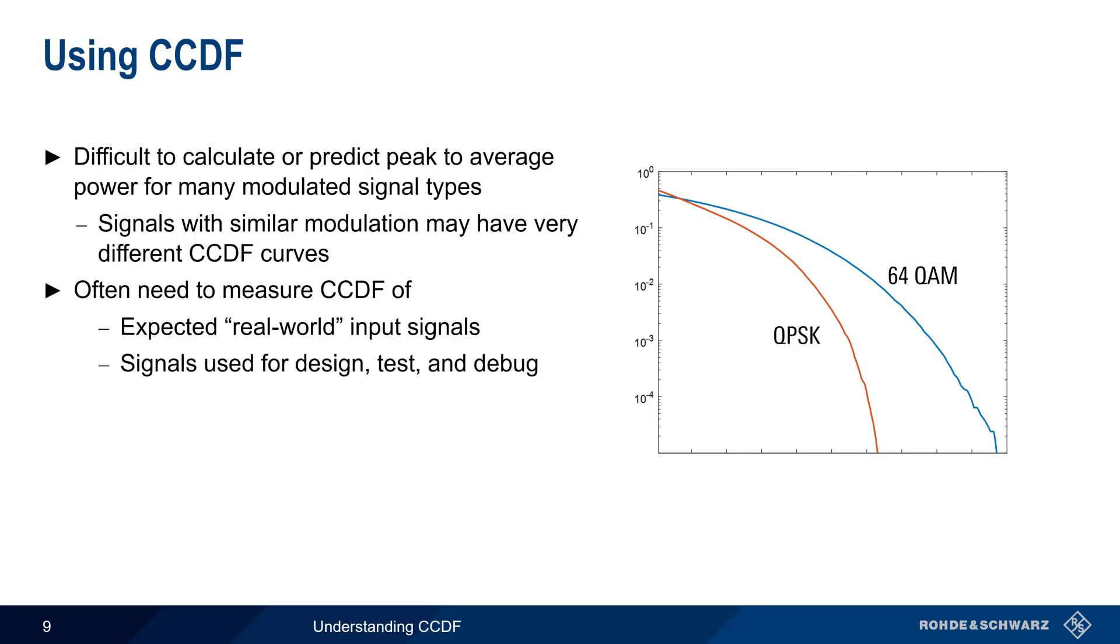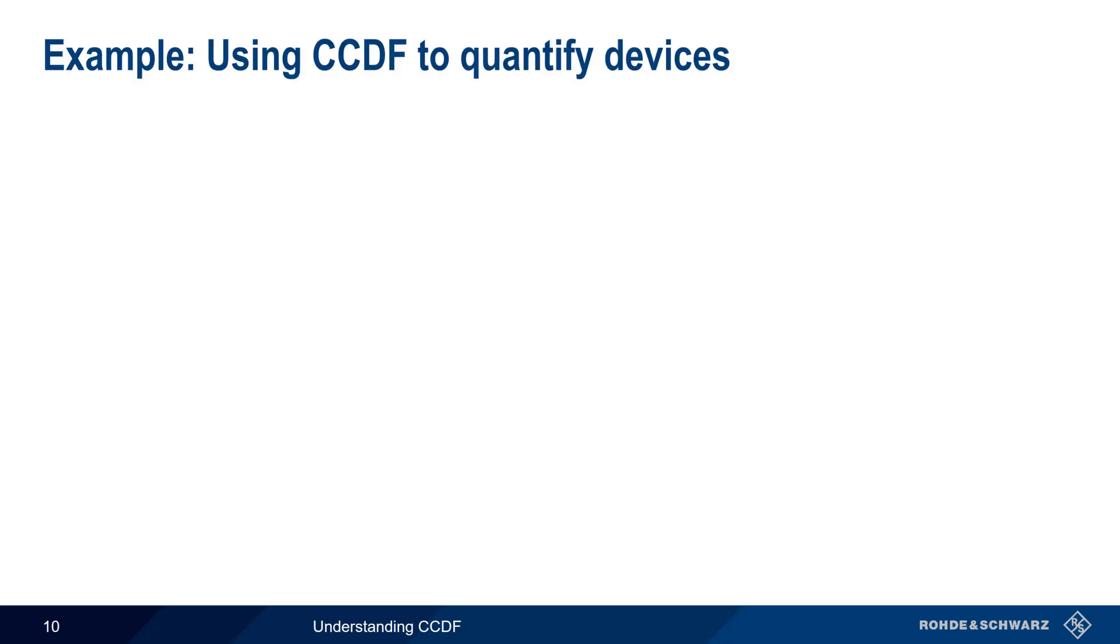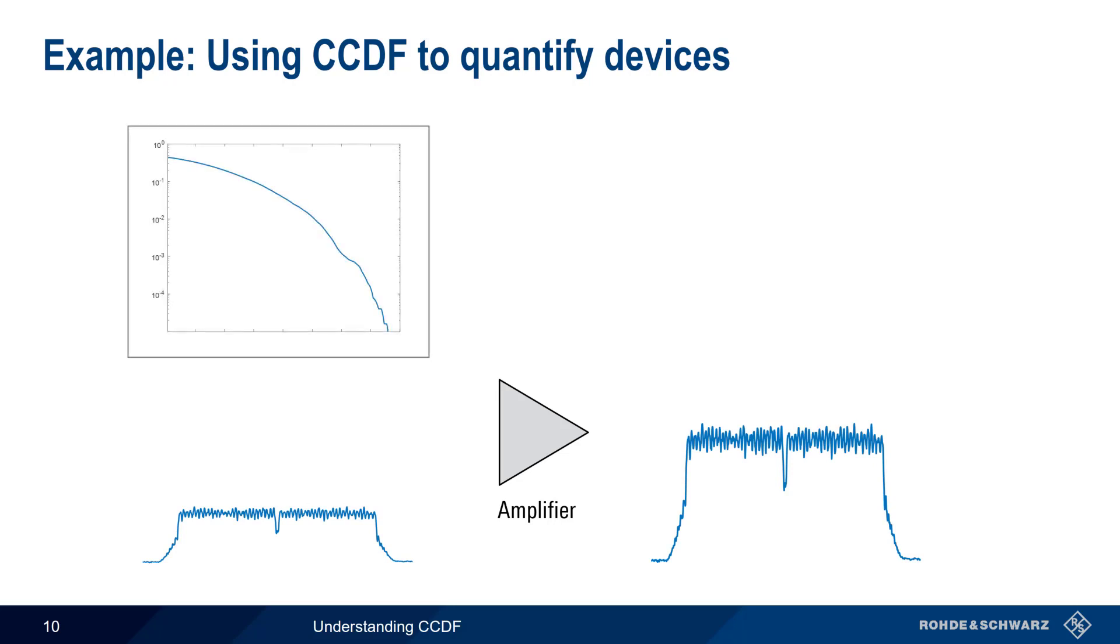Another way that CCDF can be used is by observing the changes in CCDF as the signal moves through various components. That is, we measure CCDF at both the device input and the device output, and make note of any changes. Let's look at an example of this. In this example, our device under test is a simple amplifier. Ideally, an amplifier would increase the amplitude of the signal without distortion. If the signal is amplified without distortion, the CCDF curves will be approximately the same for both the original signal and the amplified signal.